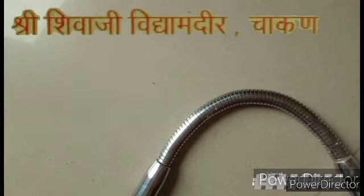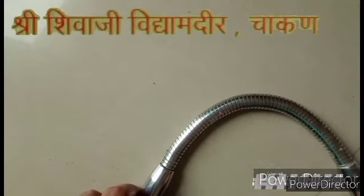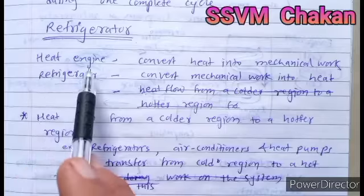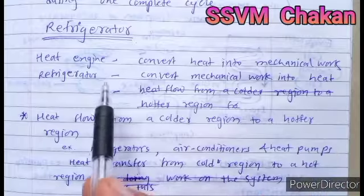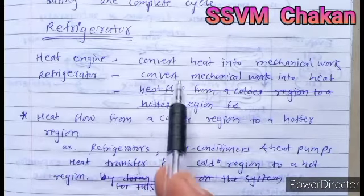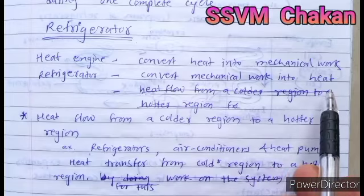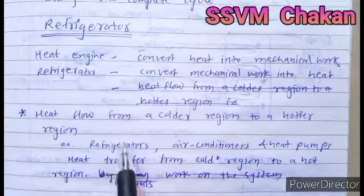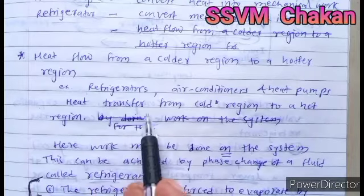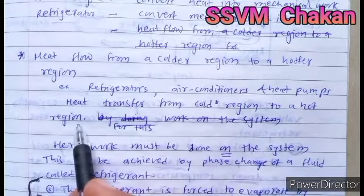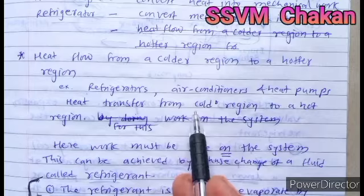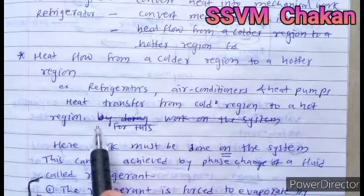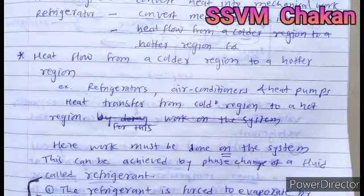When a heat engine converts heat into mechanical work, a refrigerator converts mechanical work into heat. The refrigerator principle is that heat transfers from a cold region to the hot region — in a refrigerator, heat always transfers from the cold region to the hot region.